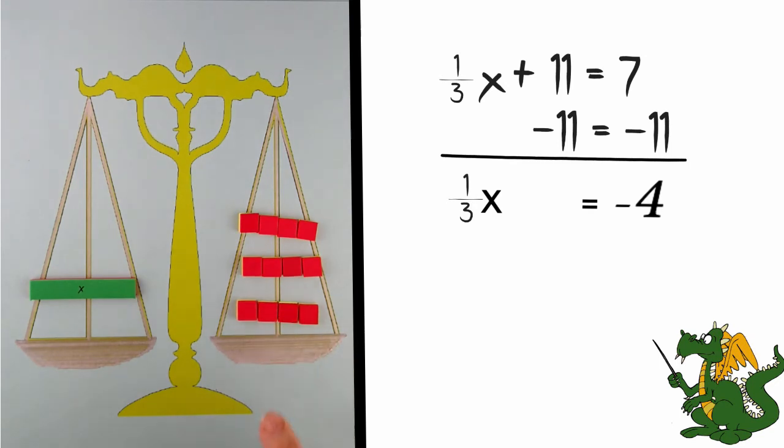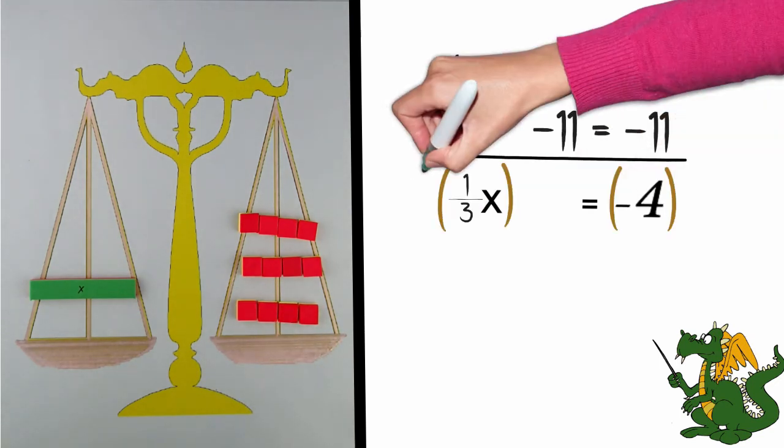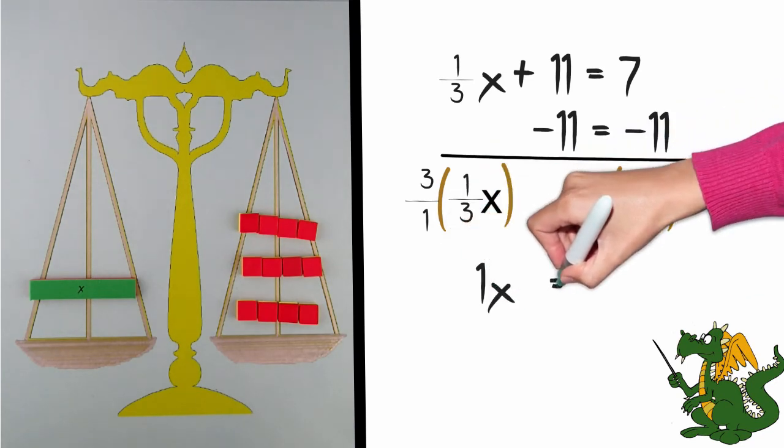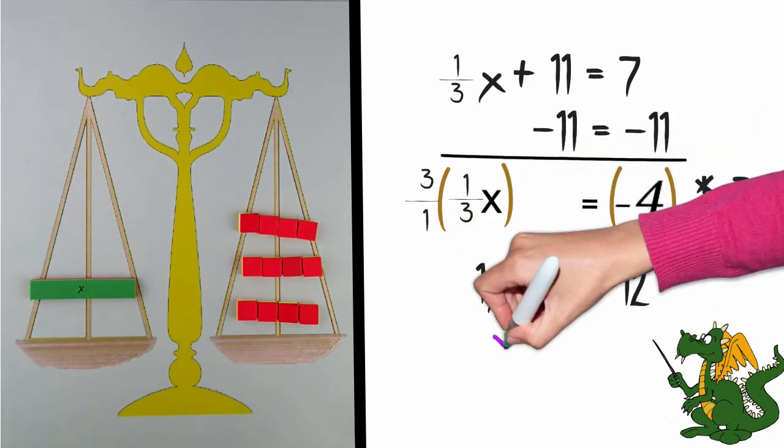If I was to do that on paper, I would simply multiply both sides of the equation by 3. 3 times a third is 1, and 3 times negative 4 is negative 12.